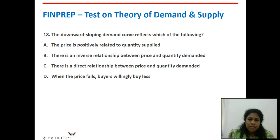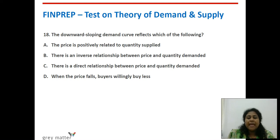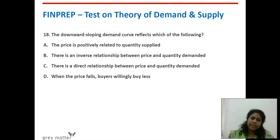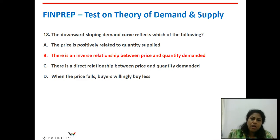Eighteenth question: the downward-sloping demand curve reflects which of the following? Option A — price is positively related to quantity supplied — that is about supply, so ignore. Option B — there is an inverse relationship between price and quantity demanded — this looks correct. Option C — a direct relationship between price and quantity demanded — means both move in the same direction, which is wrong. Option D — when price falls, buyers willingly buy less — that is also wrong. Answer is option B: there is an inverse relationship between price and quantity demanded.